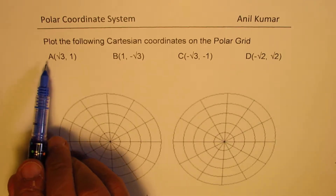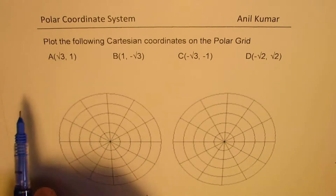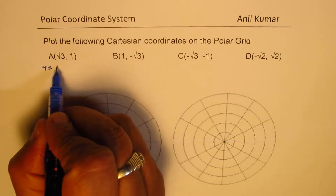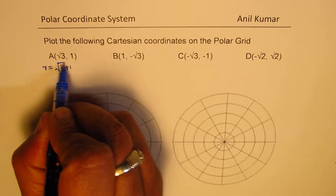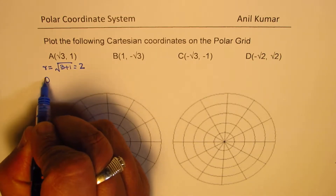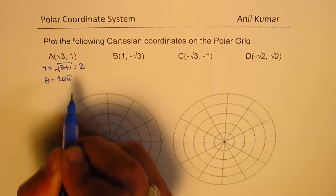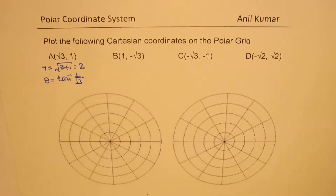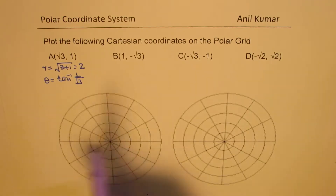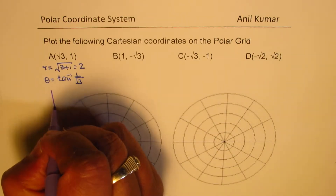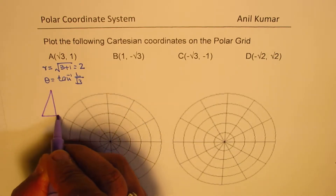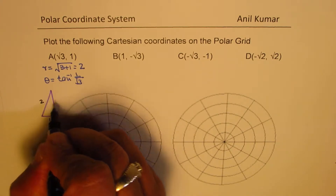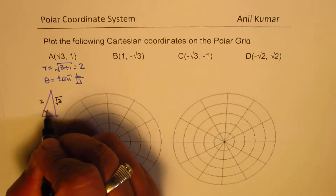The first Cartesian coordinate given to us is (√3, 1). We can find the value of r as equal to √(a² + b²), which is √(3 + 1), and that is 2. As far as theta is concerned, theta will be tan inverse of y over x, which is 1 over √3. We can use special triangles here — the triangle with sides √3, 1, and 2.